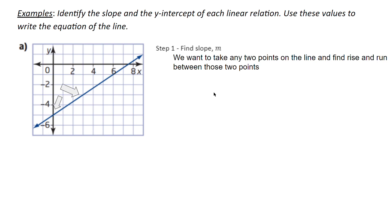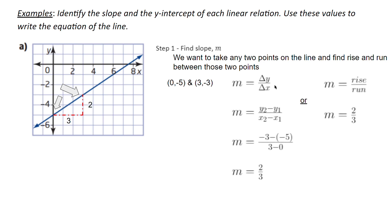We're going to pick the points (0, -5) and (3, -3). The line is increasing, and we can see that the rise is two units and the run is three units. We can find the slope by either doing delta y over delta x, which is y2 minus y1 over x2 minus x1, or we can use the rise over run equation — in either case, giving us two thirds.